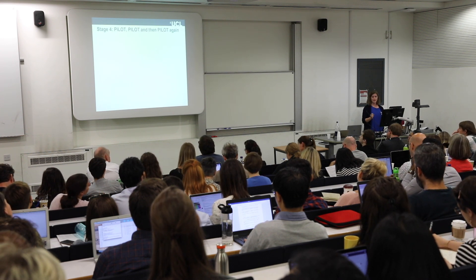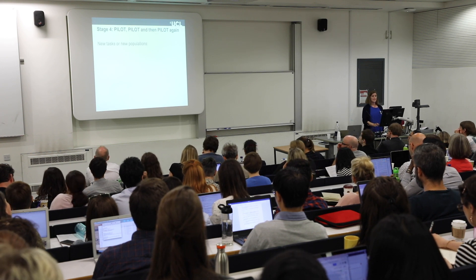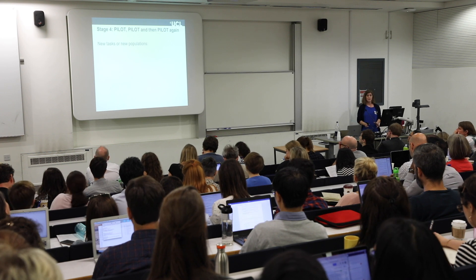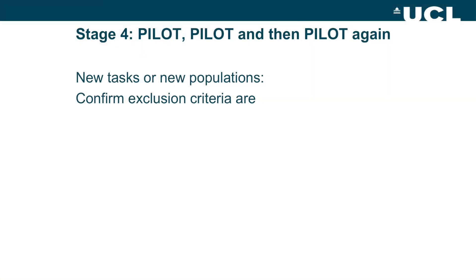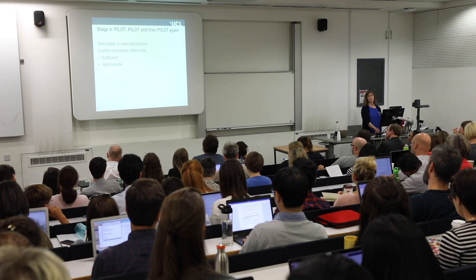Then — as we just heard from Katia — you pilot, and pilot, and pilot again, especially with a new task or new population. This is how you verify that your exclusion criteria actually work as intended. Ideally run some participants in the lab where you can observe their behaviour and see how it maps onto your exclusion criteria. You need to make sure your criteria are sufficient — catching all the data you'd genuinely want to exclude — but also appropriate, not overly harsh. For example, make sure your language screening isn't throwing out participants who are legitimately part of your target sample.